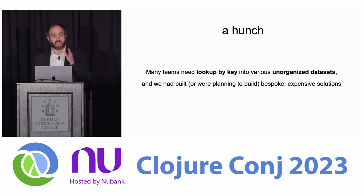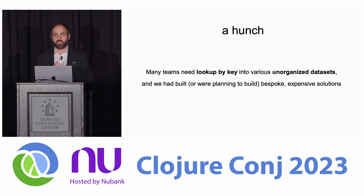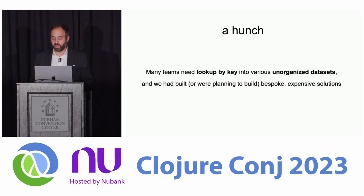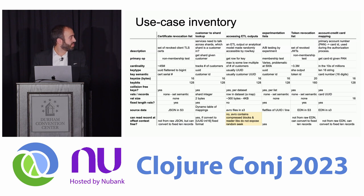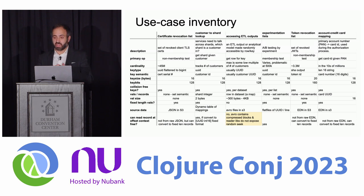Rich identified this — that this is a categorical thing where we need to lookup by key into mostly stable data sets, data sets that grow over time where the values associated with keys aren't really changing. So we reached out to other teams and solicited more use cases, more stories that fit a similar mold. The spreadsheet contained a lot of information about the use cases: what's the cardinality of each set or map, what are the sizes of the keys, what are the semantics of the keys and values, are they fixed length or variable length, what's the primary operation — is it a non-membership test, a membership test, or looking up some nugget of information?